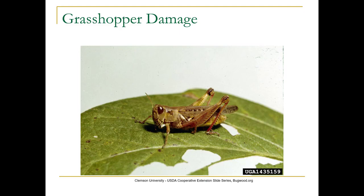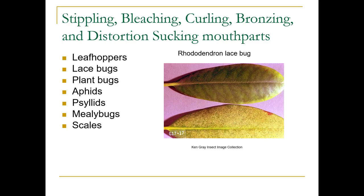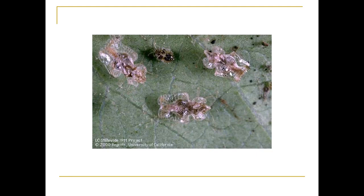Here's a red-legged grasshopper — mostly on the east side of the mountains, but you will see them on this side too. Other damage you might see includes stippling, bleaching, curling, bronzing, and distortion. This is a rhododendron lace bug, and you can see on that bottom leaf what stippling is — little white or yellow specks from piercing-sucking mouthparts.